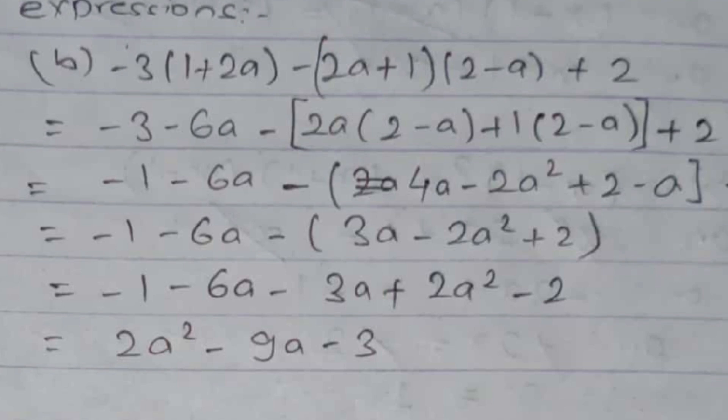Question 1b: −3(1 + 2a) − (2a + 1)(2 − a + 2). We multiply −3 with (1 + 2a): −3×1 = −3 and −3×2a = −6a. Then we multiply (2a + 1)(2 − a), writing 2a first, then (2 − a) at back, and +1 multiplied by (2 − a + 2). Expanding: 2a×2 = 4a, 2a×(−a) = −2a², 1×2 = +2, 1×(−a) = −a.